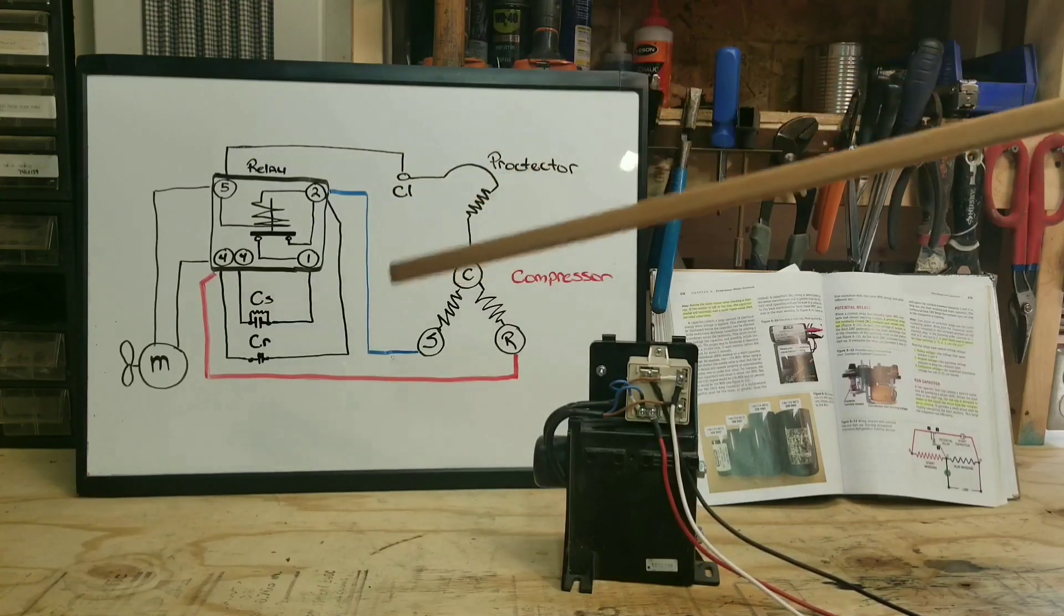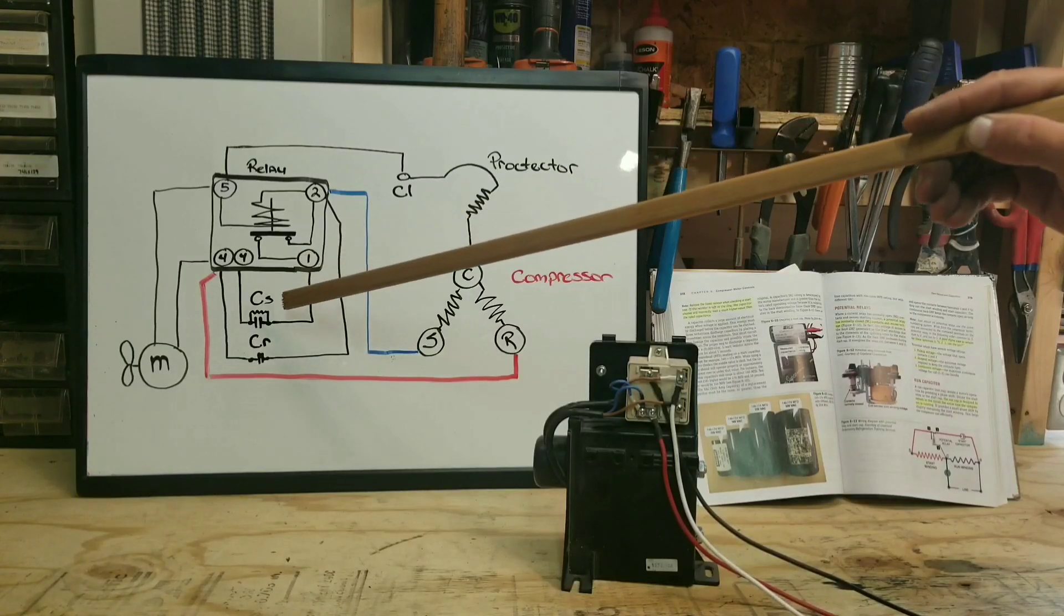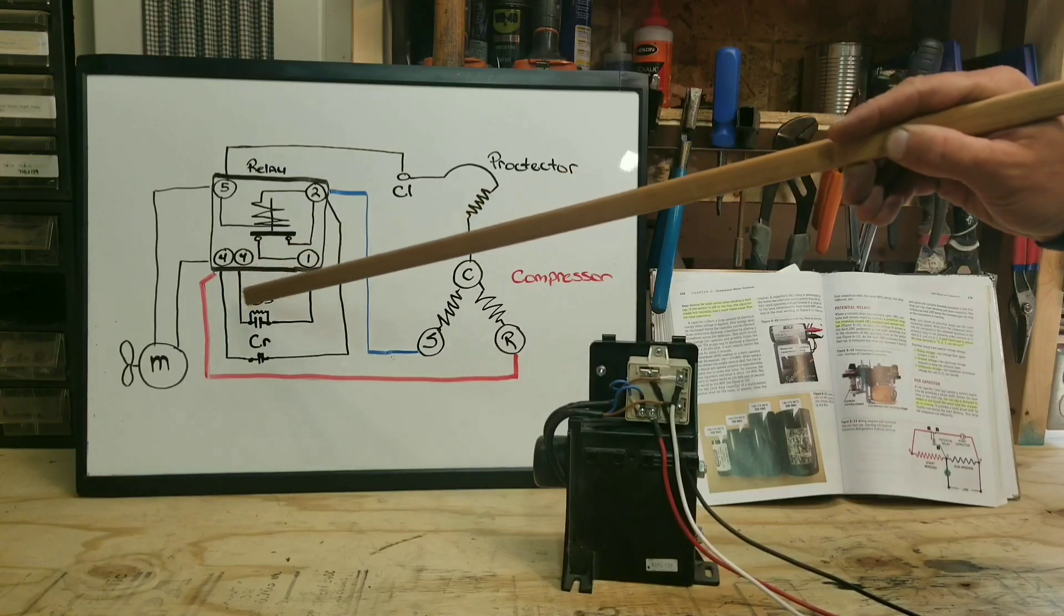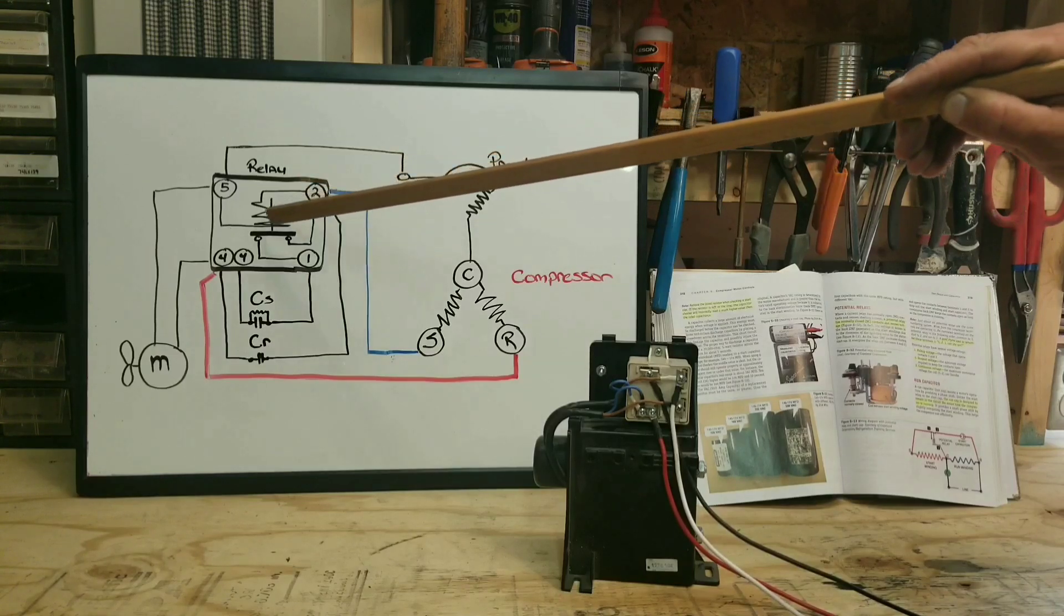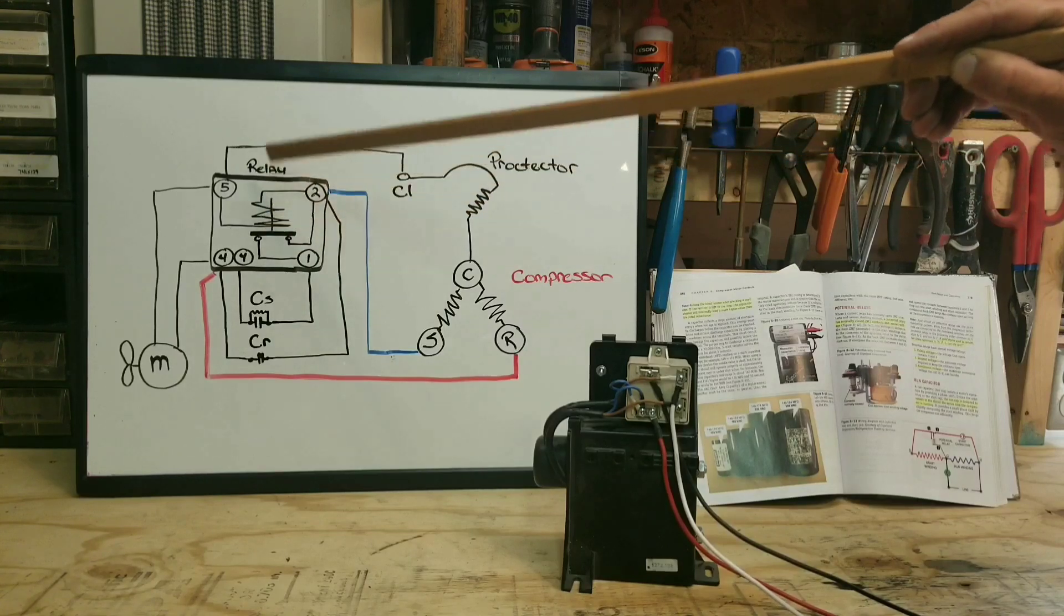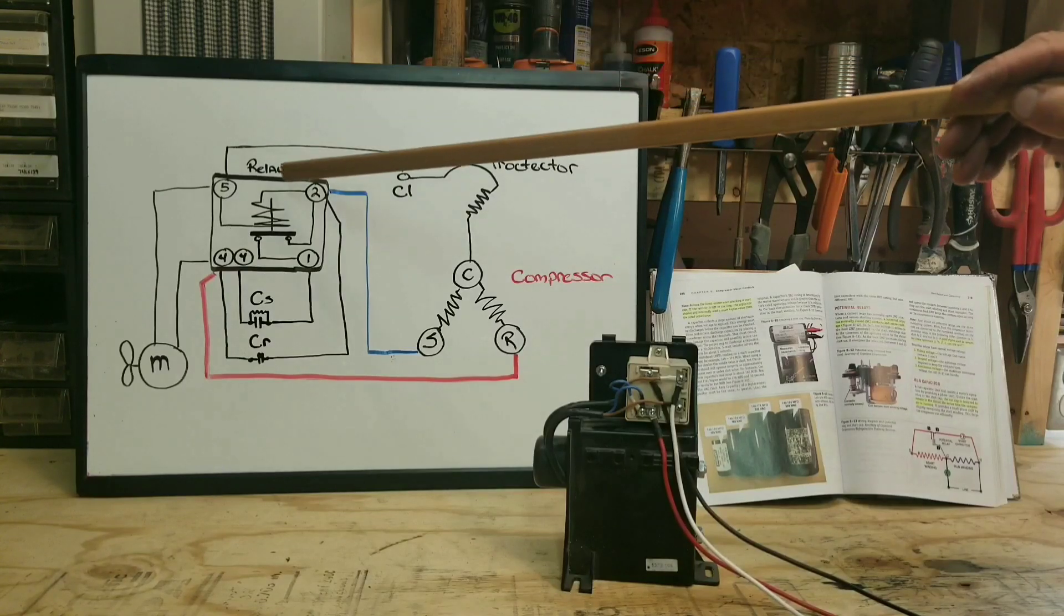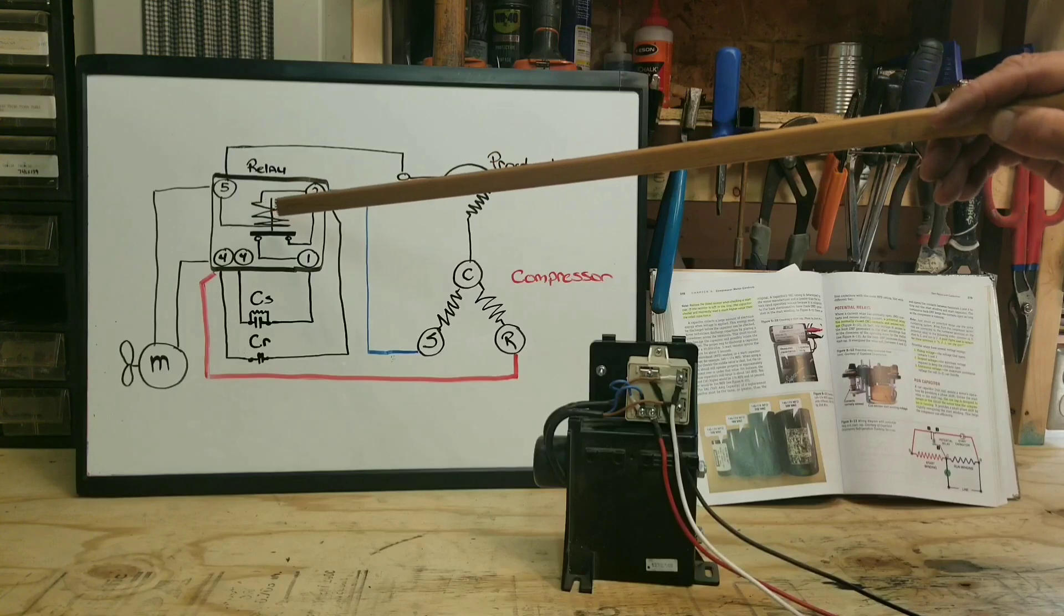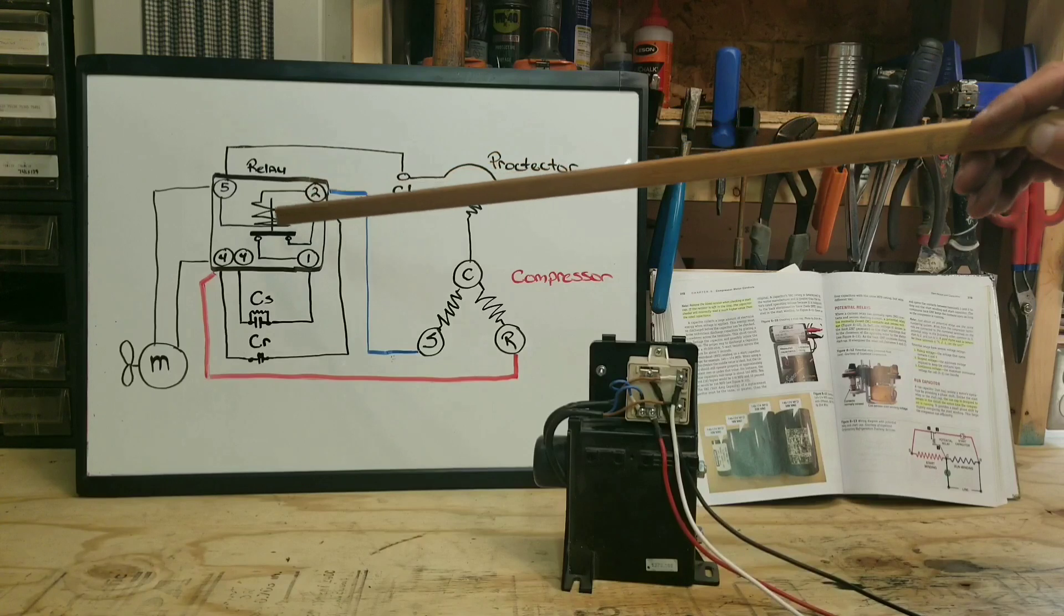Now after we get that compressor to turn over, we need to get that start capacitor out of the circuit. If you look at our start capacitor right here in our potential relay, in order to do that we need to have the terminals right here between one and two—we need to open those up. Now if you notice right here, forgive me I'm not an artist, but I drew it the best I could. So this squiggly line right here is actually the coil to this potential relay.